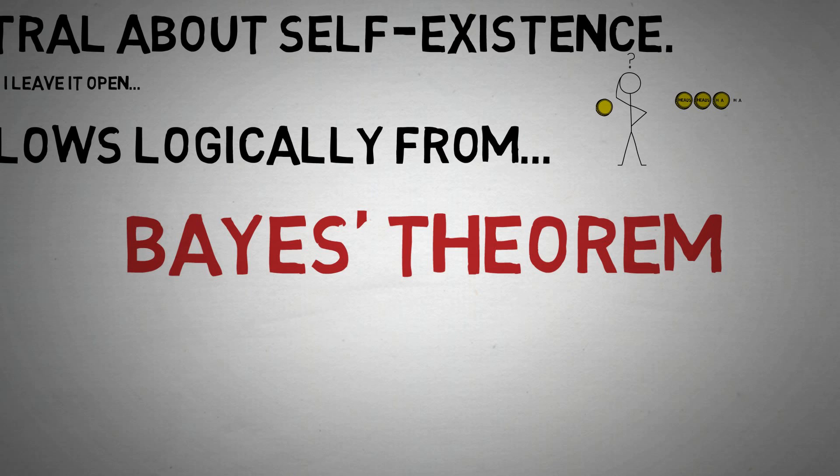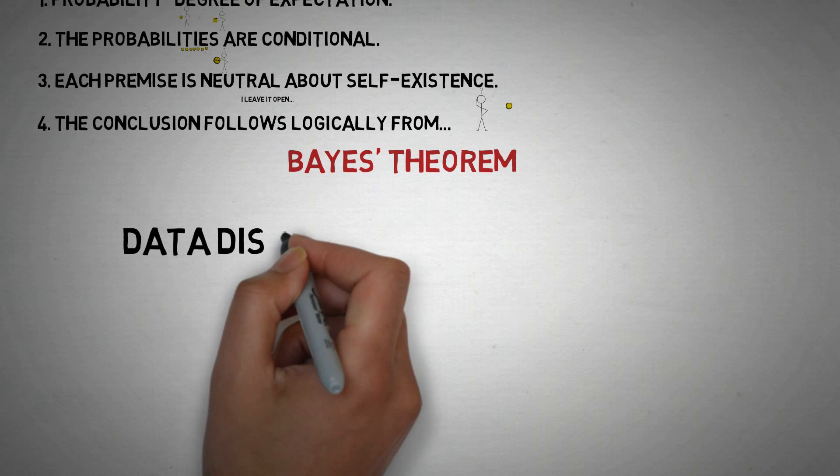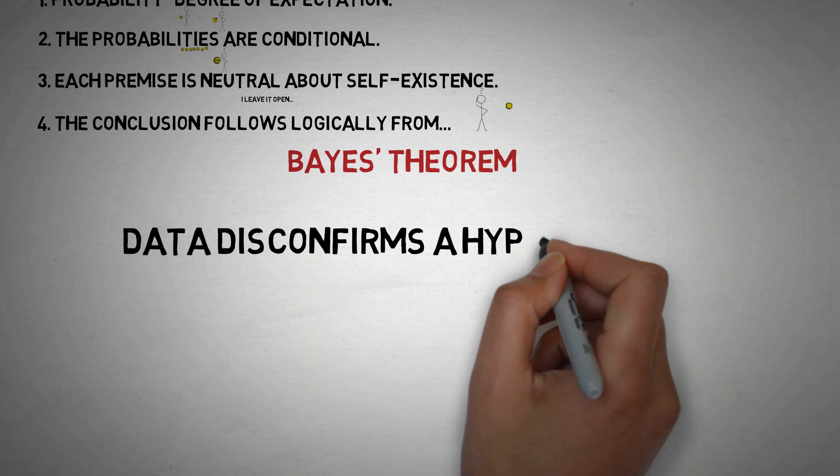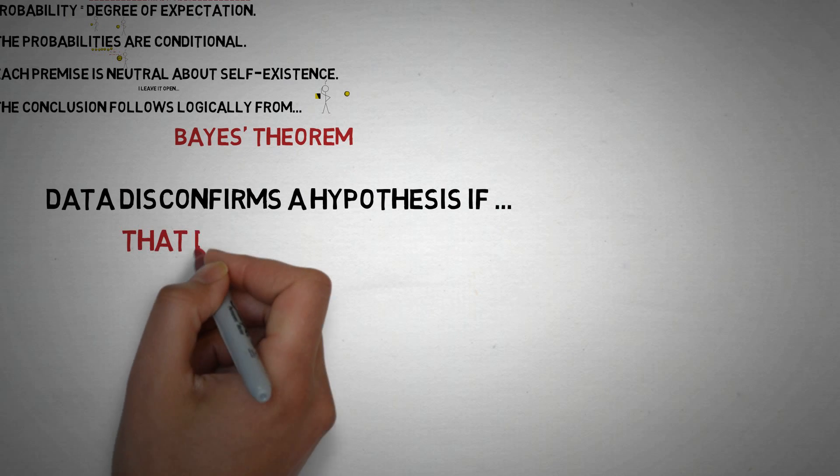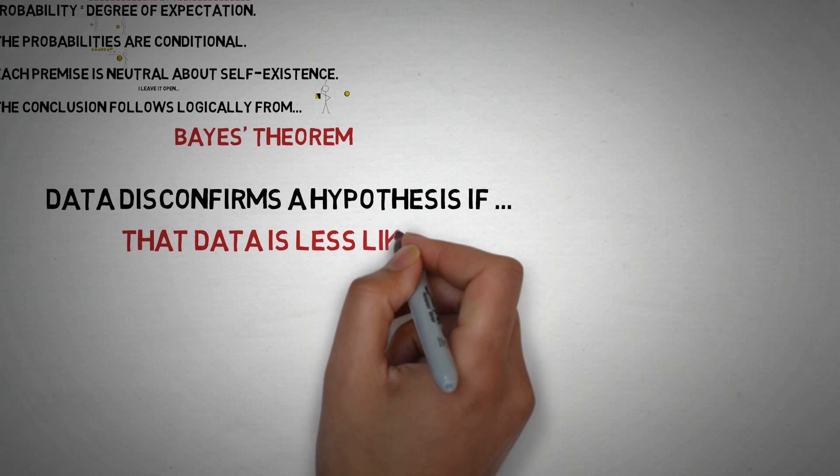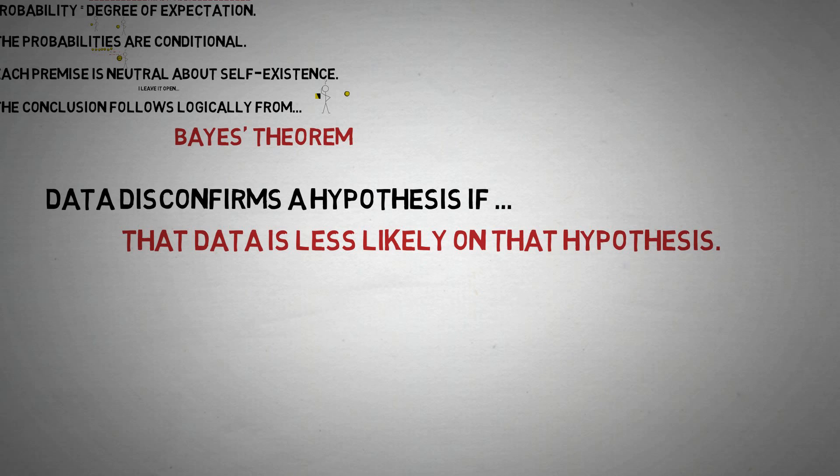Bayes' theorem allows us to update our degree of expectation about a hypothesis, given input conditional probabilities. The basic idea is that any piece of data disconfirms a given hypothesis when that data would be less likely on that hypothesis than on some alternative hypothesis.